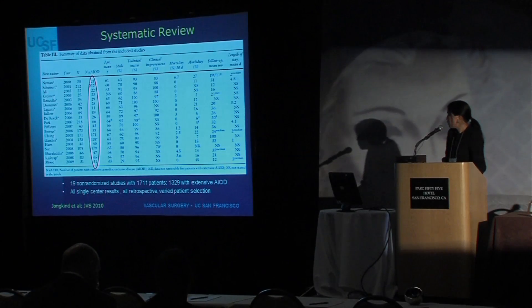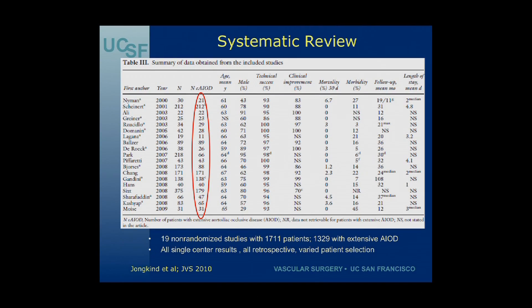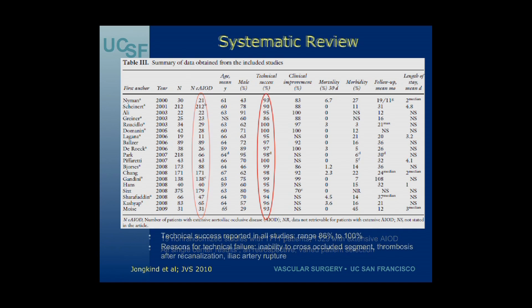This systematic review was published in 2010. It consists of 19 non-randomized studies with over 1,700 patients, 1,300 of whom had extensive aorto-iliac occlusive disease — type C or D lesions. These are all single-center results, all retrospective analyses, and all tertiary care referral centers. Technical success rates were pretty good, ranging between 86% to 100%, with heterogeneity across studies.